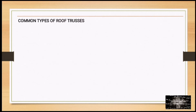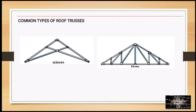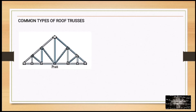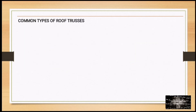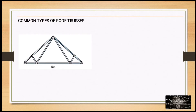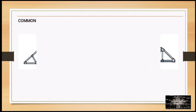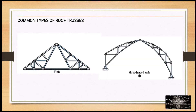Common types of roof trusses include: scissors, Howe, cambered Fink, Warren, sawtooth, fan, bowstring, Fink, and three-hinged arch.